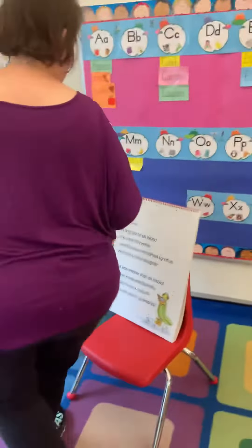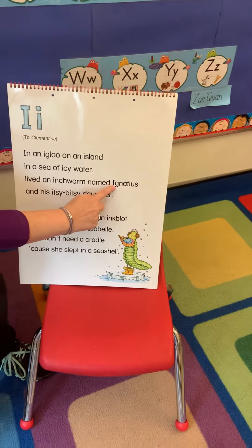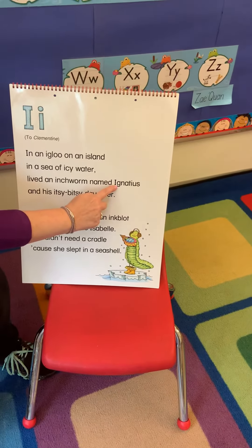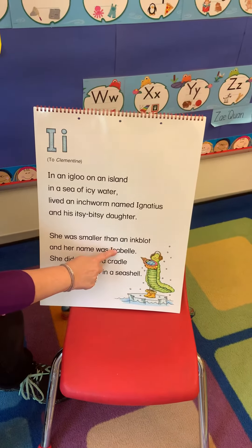And now we're going to look in our song at all the words that start with I: in, igloo, island, in, icy, inchworm, Ignatius — so Ignatius starts with I. Itsy starts with I. Inkblot, Isabel, and then the word in again, I-N. So that's the letter I, and that's all the words that started with I.